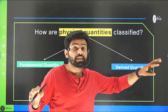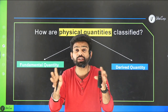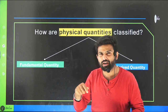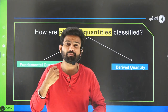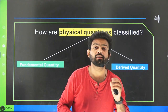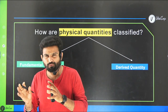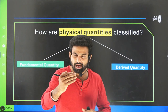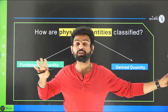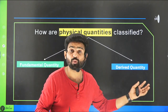Physical quantities are classified into fundamental quantities and derived quantities. Fundamental quantities are like the basic building materials — if you want to build a room or building, your fundamental quantities would be bricks, water, cement. Derived quantities are what you build using those fundamental quantities, like the wall or the building itself.